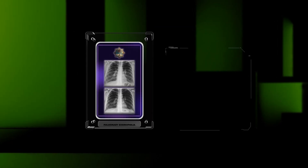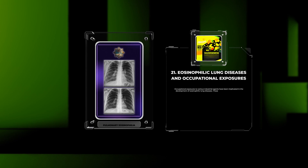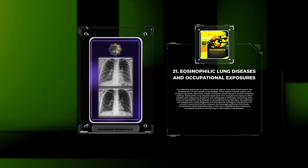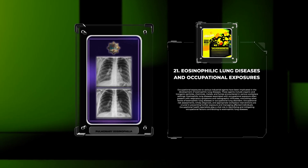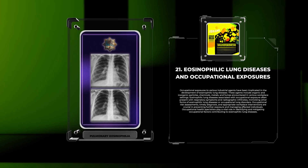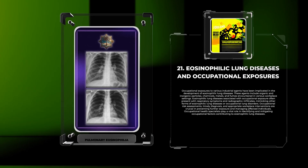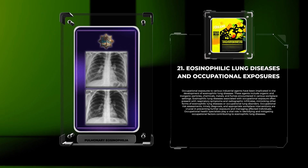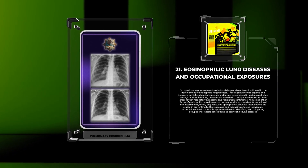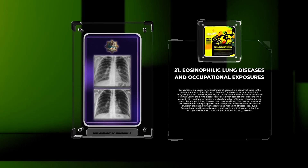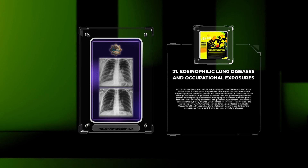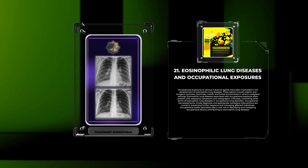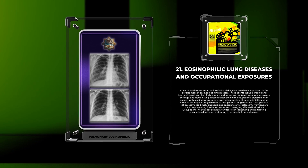Occupational exposures to various industrial agents have been implicated in the development of eosinophilic lung diseases. These agents include organic and inorganic particles, chemicals, metals, and fumes encountered in various workplace settings. Eosinophilic lung diseases associated with occupational exposure often present with respiratory symptoms and radiographic infiltrates, mimicking other forms of eosinophilic lung diseases or occupational lung disorders.